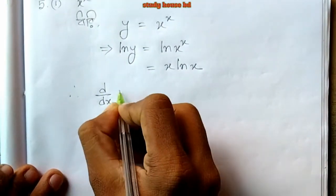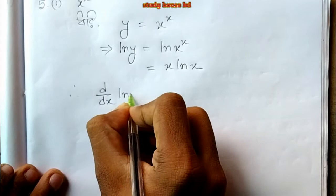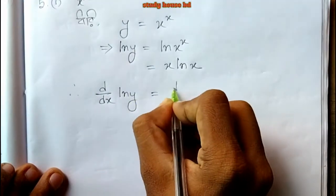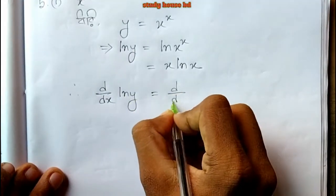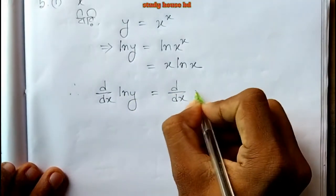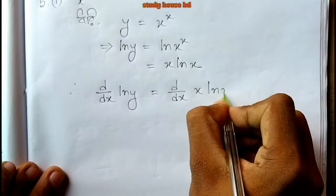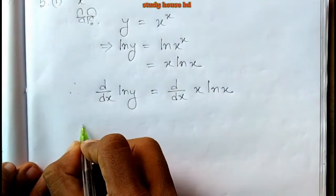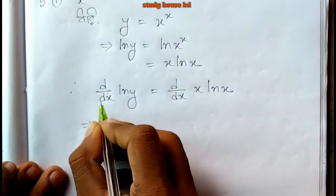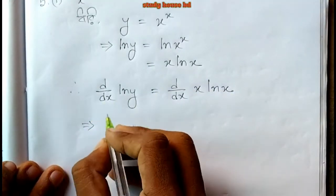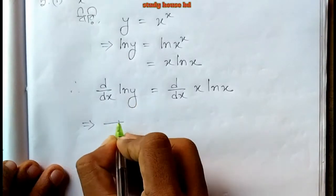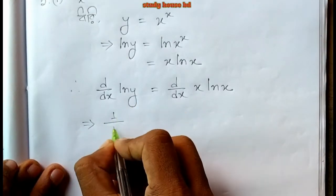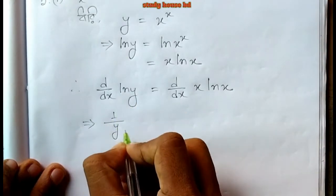Now differentiating both sides with respect to x: d/dx of ln y equals d/dx of x ln x. We know that d/dx of ln x means 1/x. So differentiating the left side, 1/y times dy/dx.